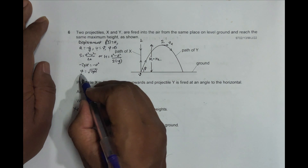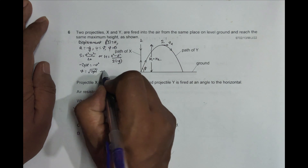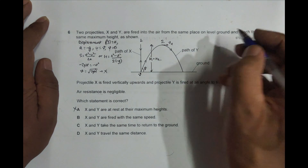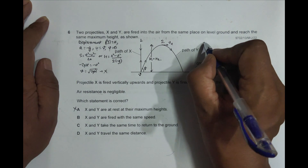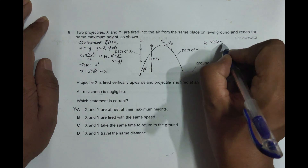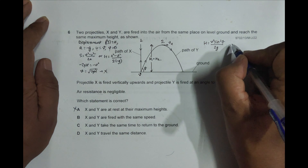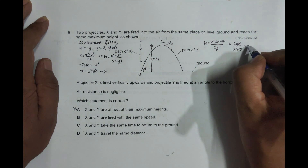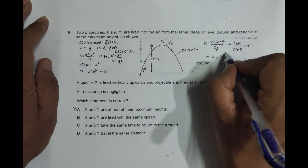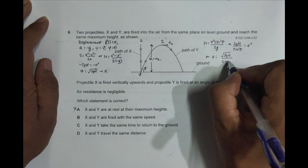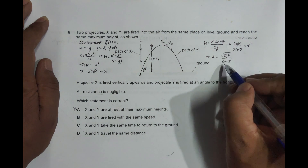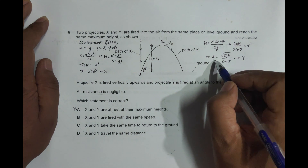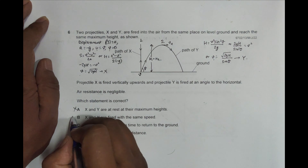Now for projectile Y, the maximum height formula is H = V²sin²θ / 2g. Rearranging gives V = √(2gH) / sinθ. Because of the sinθ factor in the denominator, the launching speed of Y is greater than that of X. So X and Y are not fired with the same speed — statement B is also incorrect.